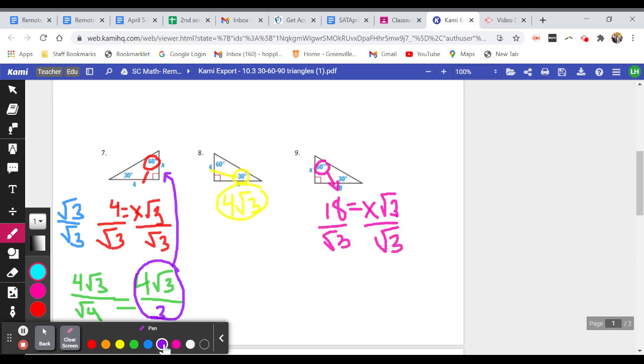And we can't have these denominators down here. So we need to multiply both the top and the bottom by root three. Again, kind of working my way backwards to the bottom here. 18 times root three is just going to be 18 root three on top. And then root three times root three gives me root nine. And I need to continue simplifying just like I did before.